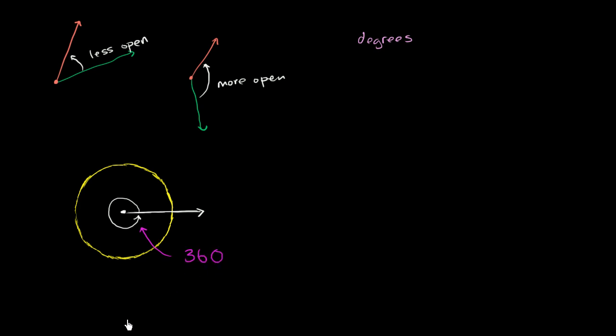360 degrees. And the notation is 360, and then this little superscript circle represents degrees. This could be read as 360 degrees.